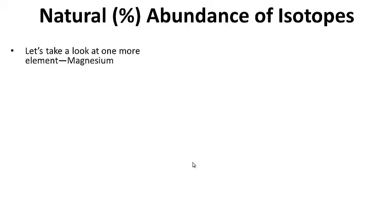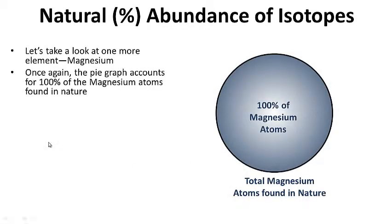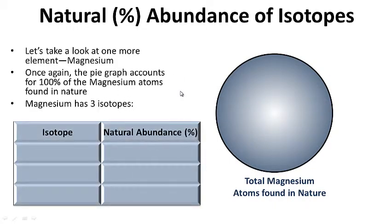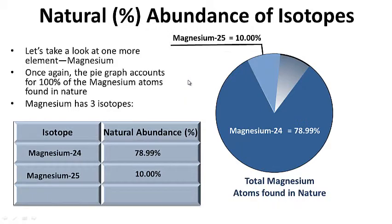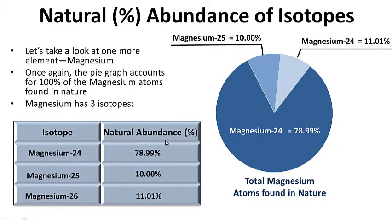Let's look at one more example with magnesium. The pie graph accounts for 100% of magnesium atoms found in nature. Magnesium has three isotopes. Magnesium-24 makes up 78.99% of all magnesium atoms. Magnesium-25 makes up 10% of all magnesium atoms. And magnesium-26 makes up about 11.01% of all magnesium atoms. Notice they all add up to 100%.